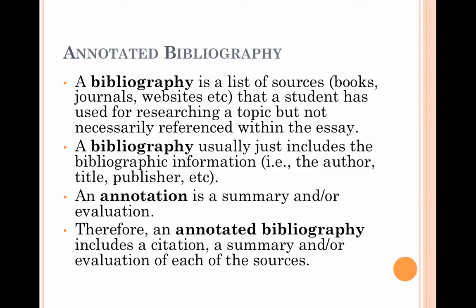The annotated bibliography you're going to produce requires you to find four sources in relation to your problem. It doesn't mean you're going to use all of them as references in your research essay — you might find others or decide some aren't very useful. Usually a bibliography looks like a reference list with citations and publication details, but when we add the 'annotated' part, it means after each citation you include a short summary and evaluation of the source.